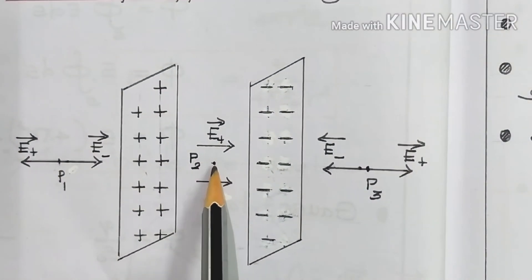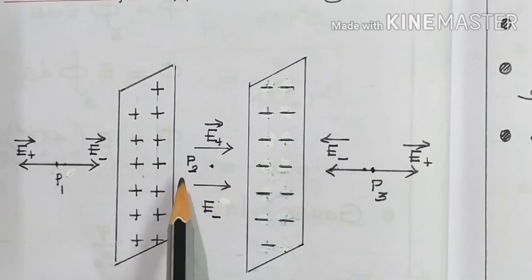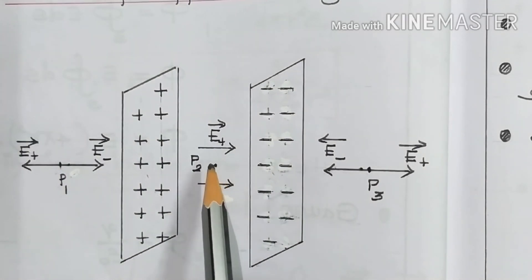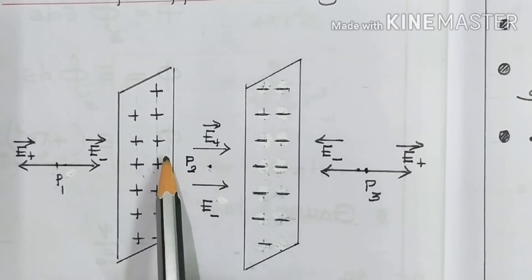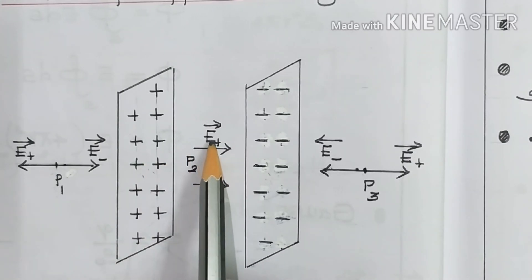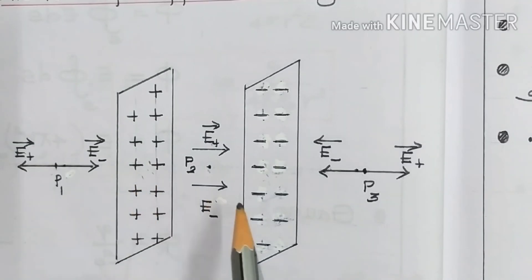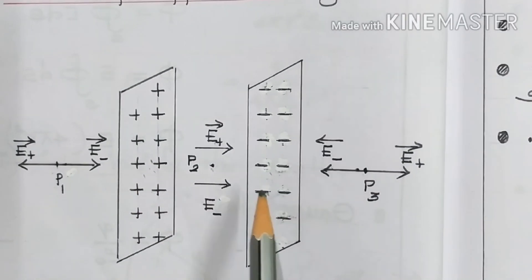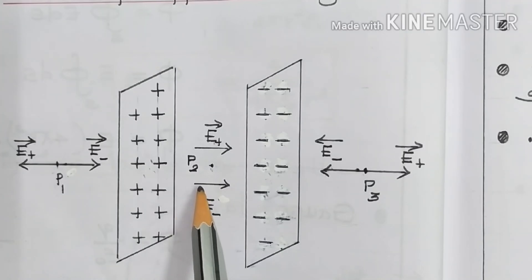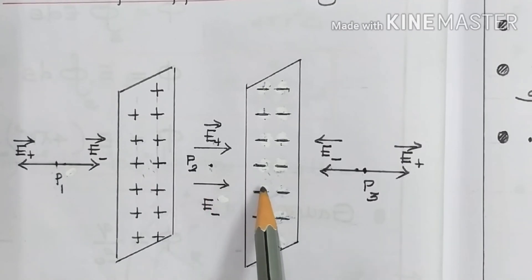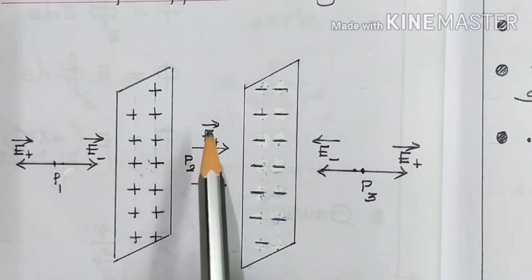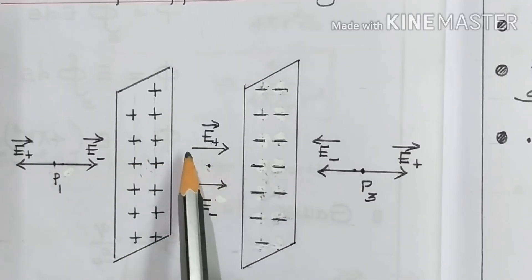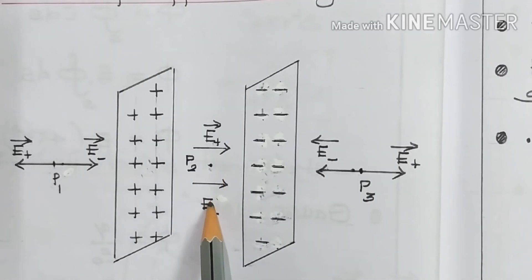Now let us consider point P2, which lies in between the two sheets. The electric field due to the positive sheet goes outward from that sheet in this direction. The electric field due to the negative sheet — since field lines come towards it — also points in the same direction at P2. So altogether at P2, both E-plus and E-minus are pointing in the same direction, and they add up.